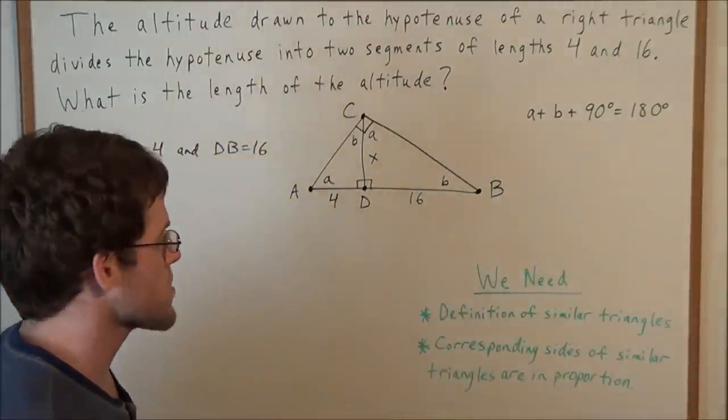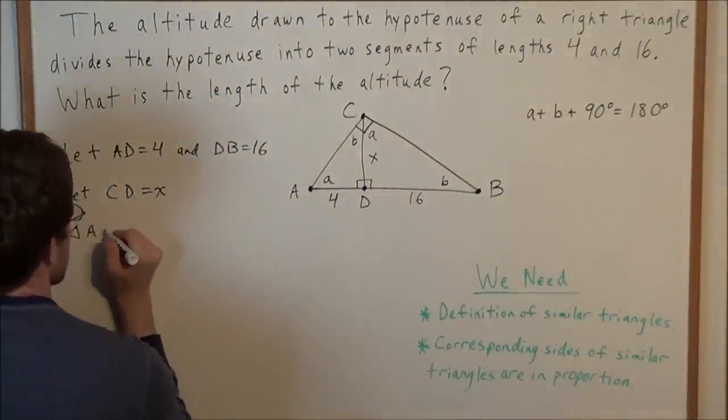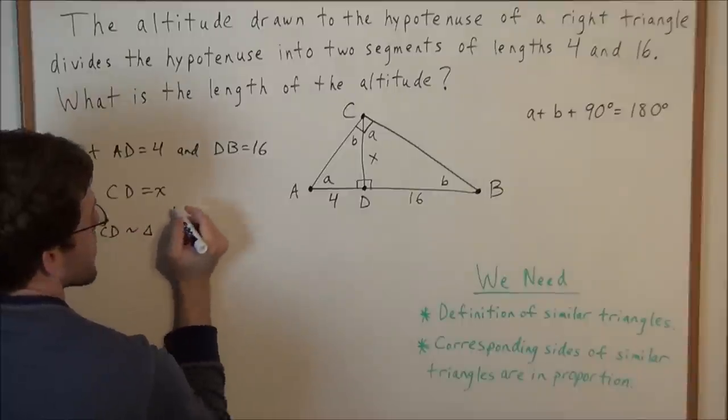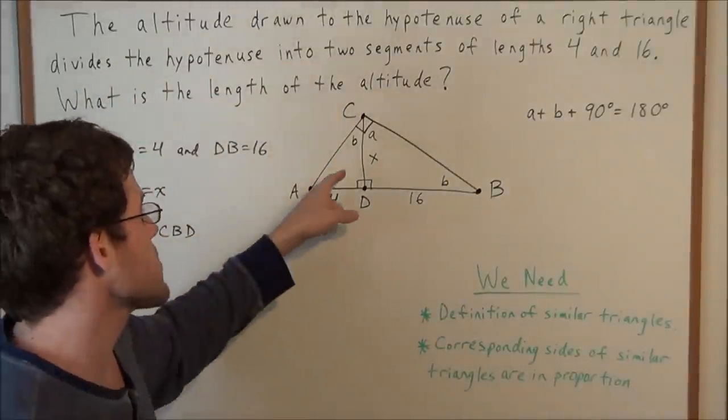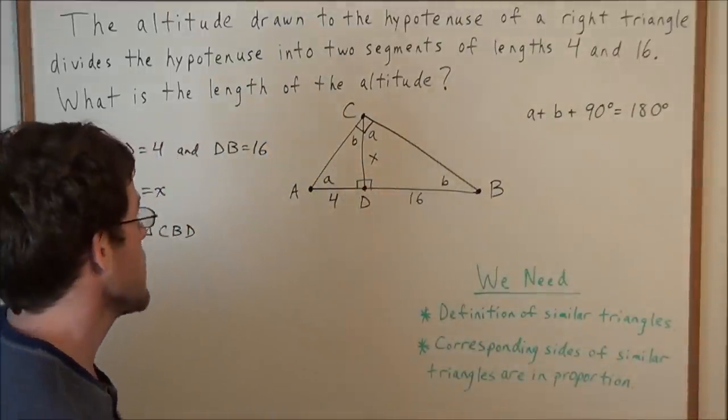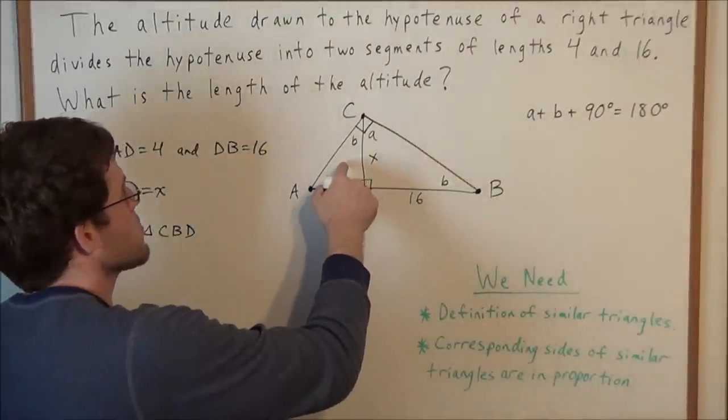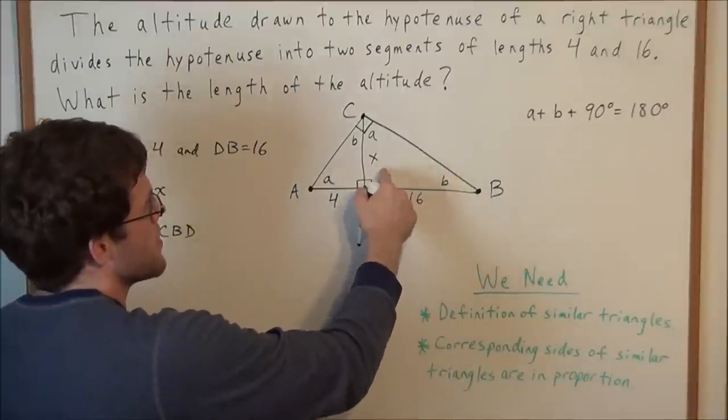So now, by definition of similar triangles, we have that triangle ACD is similar to triangle CBD. And the reasoning for this, the interior angles of each of these triangles are exactly the same. In this triangle we have angles A, B, and 90 degrees, and in this triangle we have angles A, B, and 90 degrees.